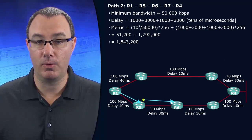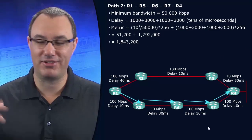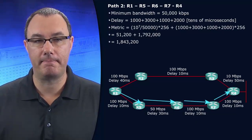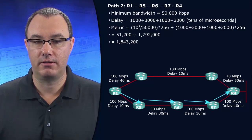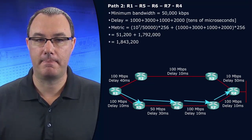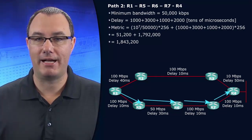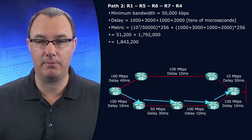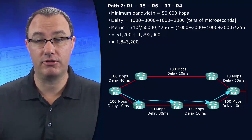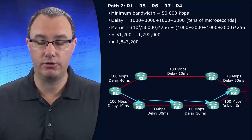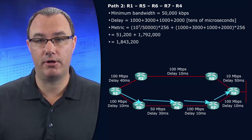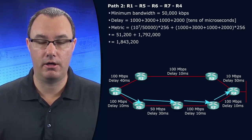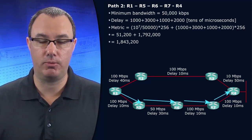Remember that lower is better here with metrics. Sometimes we forget that — sometimes we think higher numbers are good. But it's a metric; it's a cost, if you will. So that being said, bandwidth is more impactful than delay, and that will be my deciding factor for EIGRP path selection. I have, in fact, never seen that not be the case in the wild. Your mileage may vary, but now you have a deeper understanding of the behavior of this mathematical operation that we see with the EIGRP metric.